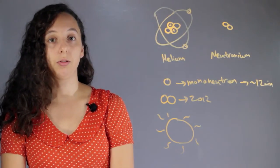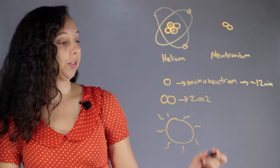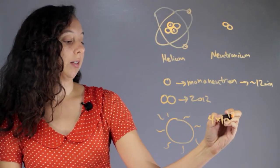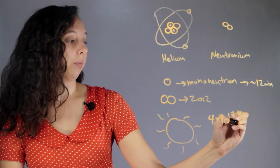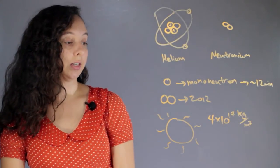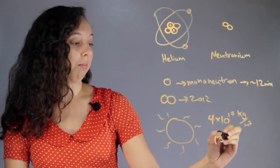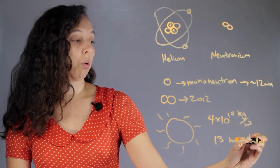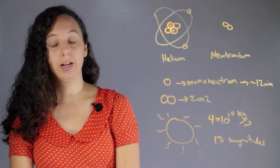Forming real Neutronium. The density of this would be 4 times 10 to the 17th kilograms per meter cubed. This is actually 13 magnitudes more dense than any other substance.